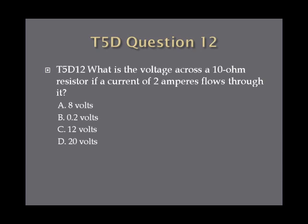Question 12: What is the voltage across a 10 ohm resistor if a current of 2 amperes flows through it? A. 8 volts. B. 0.2 volts. C. 12 volts. Or D. 20 volts.